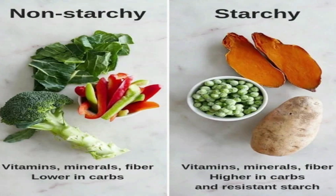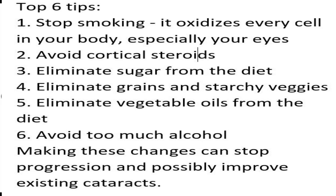Here is a summary of the six tips: 1. Stop smoking — it oxidizes every cell in your body, especially your eyes. 2. Avoid corticosteroids. 3. Eliminate sugar from the diet. 4. Eliminate grains and starchy vegetables. 5. Eliminate vegetable oils from the diet. 6. Avoid too much alcohol. Making these changes can stop progression and possibly improve existing cataracts.